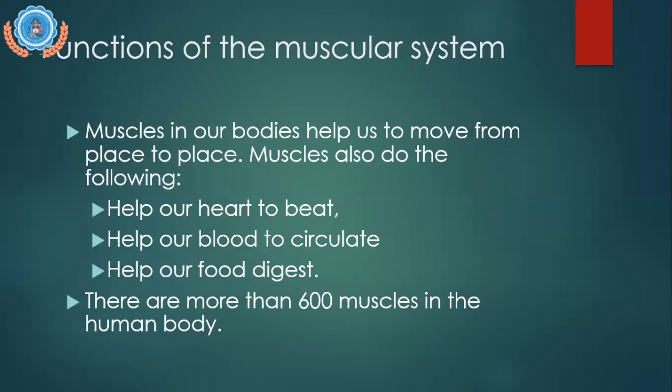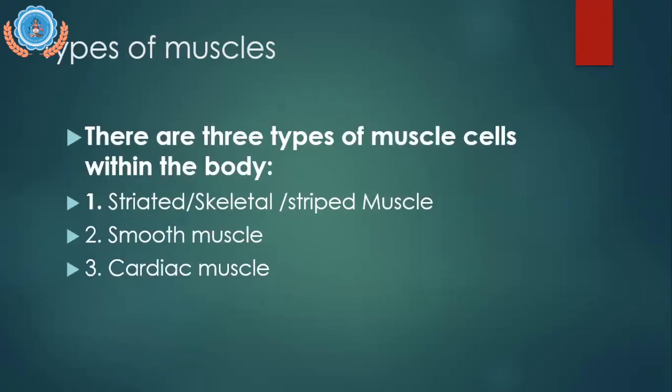There are three types of muscle cells in the body: striated muscle, also called skeletal or striped muscle; smooth muscle; and cardiac muscle. Write that down please.